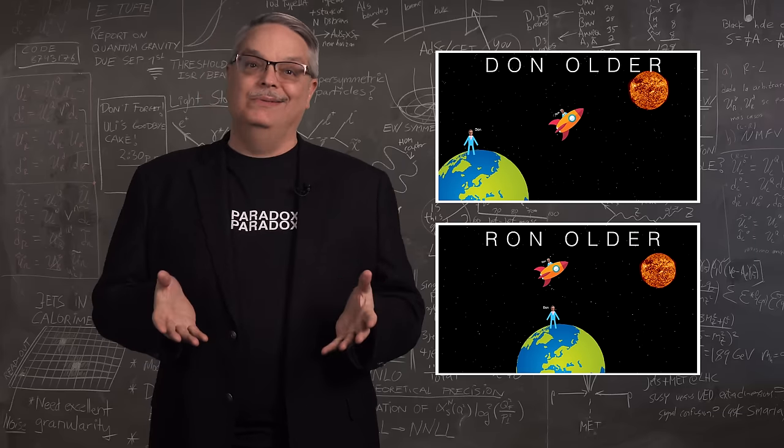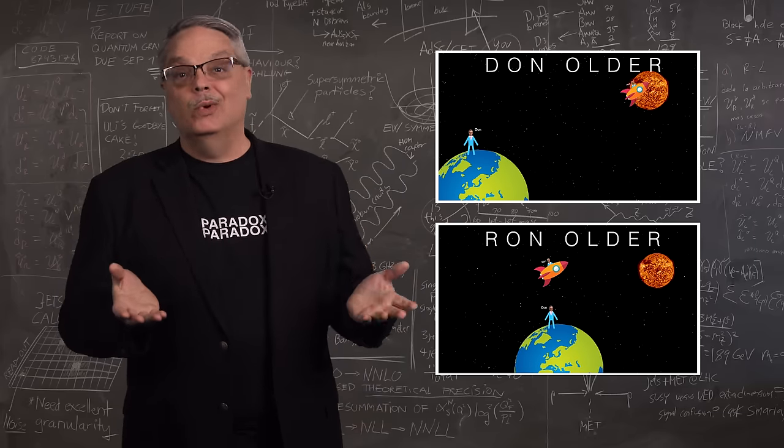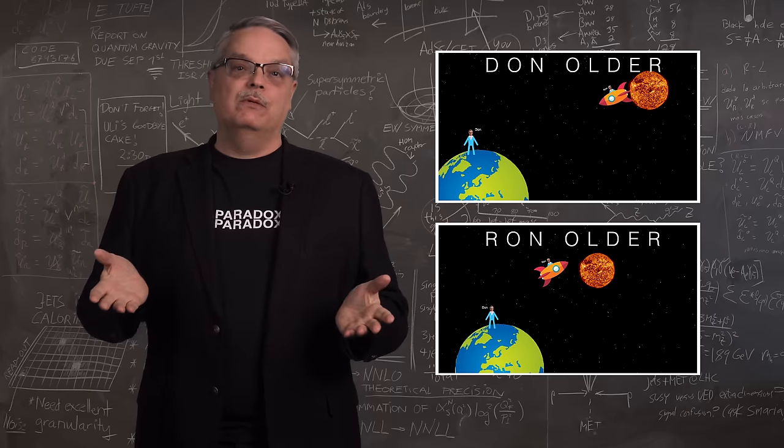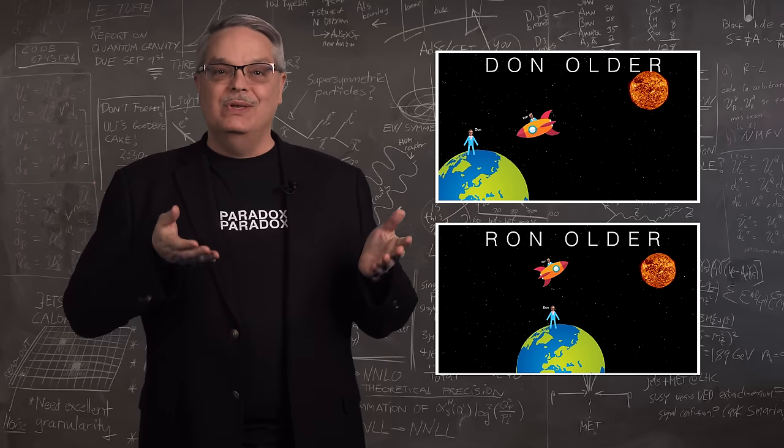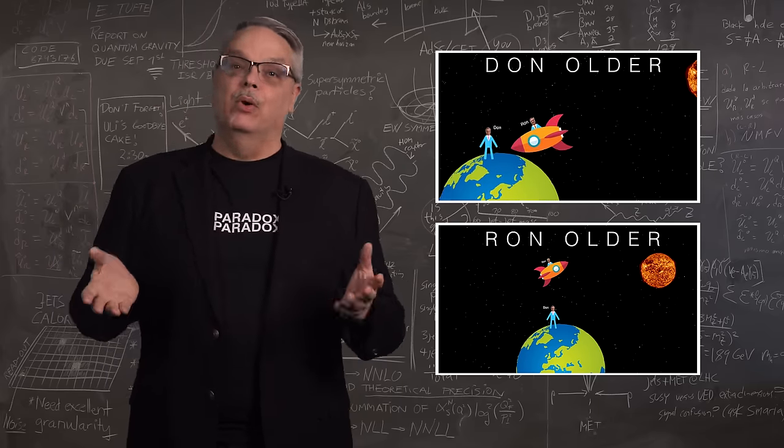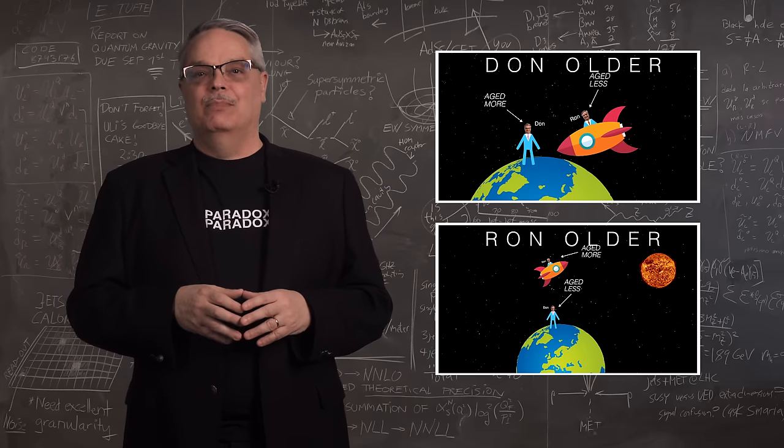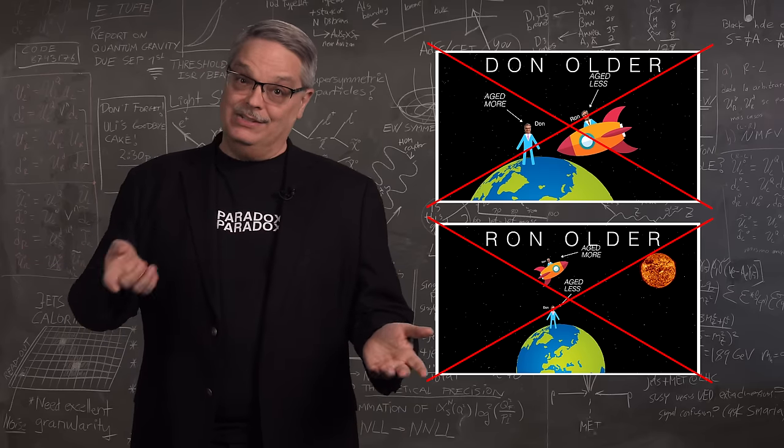In such an experiment, there can be only one outcome. Only one person is older and yet we have two participants who have different points of view. It seems that both can claim that they are unmoving, which means that both can claim that they are older than their twin. And obviously they both can't be right, hence the name paradox.